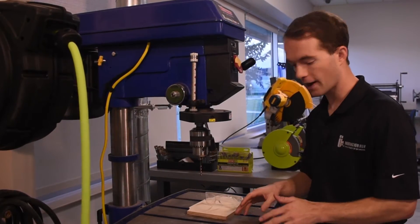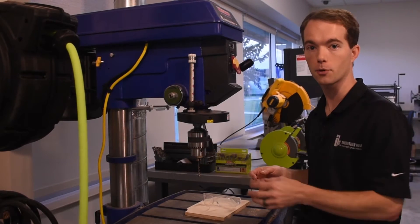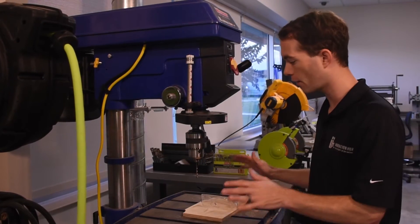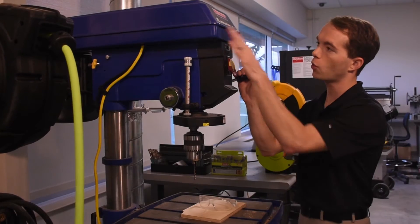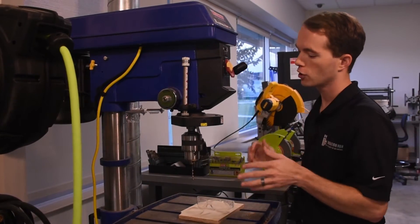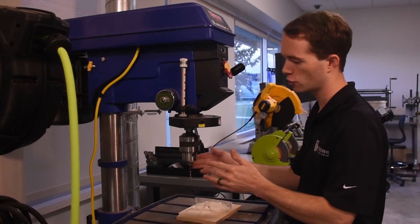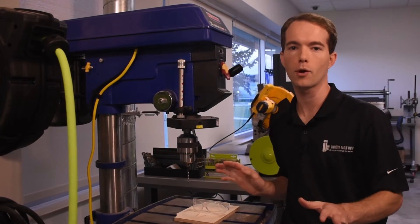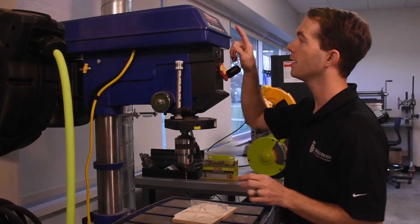Here inside this table, we've got some T-slots that you can put some clamps into and things like that. It's a very nice table. This is a 20-inch, 12-speed drill press. 20-inch is kind of meaningless. It refers to the overall swing. Don't even worry about that. What is important to know up here is 12-speed.